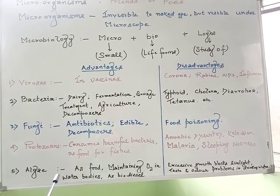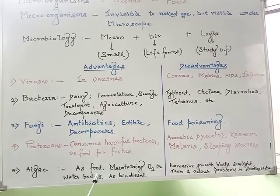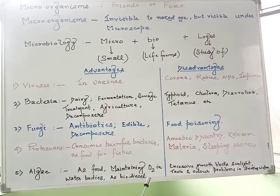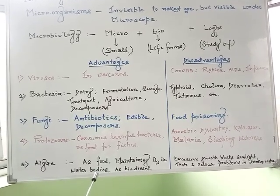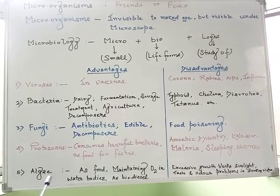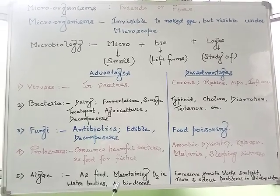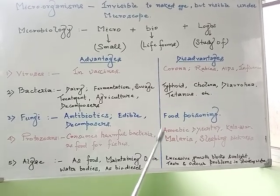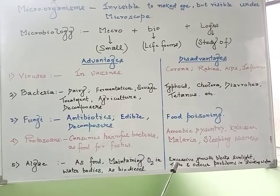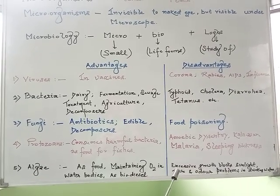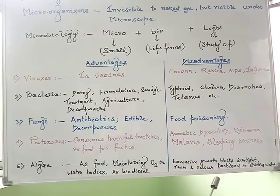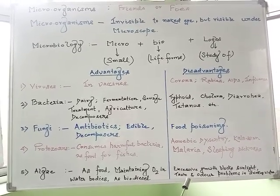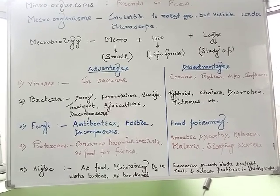The next and last category is algae. Algae act as food for different types of aquatic life forms within the water body, and they help in maintaining the oxygen levels within any water body. They are also now used for deriving fuel, or biodiesel. As for the disadvantageous aspect, algae may create hindrance due to excessive growth by blocking sunlight within any water body, and they also cause taste and odor problems in drinking water.